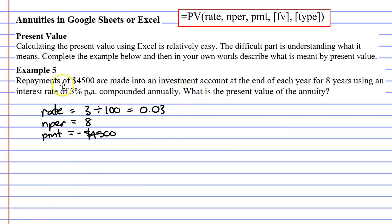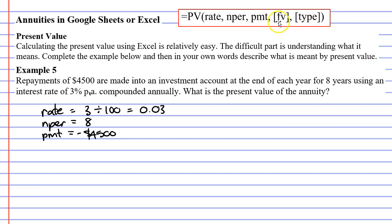The question doesn't say anything about future value, but it does tell us that repayments are made at the end of each year, meaning our type is type 0. Because we don't know our future value and our type is 0, we're not going to enter any values for those. Square brackets mean we don't have to write anything there — by default Microsoft Excel and Google Sheets will put 0 in place of these.